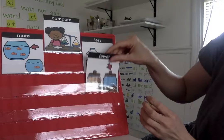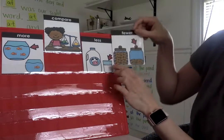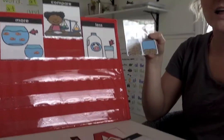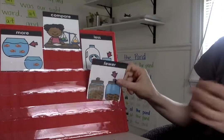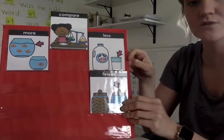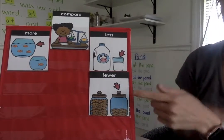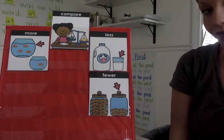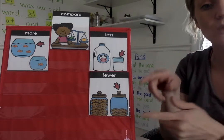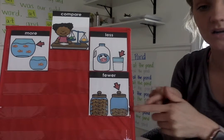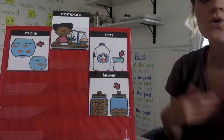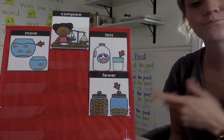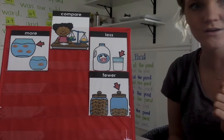Another word — 'fewer' — has the same meaning as less. So if you have less, you have fewer; those two words mean the same thing. Sometimes we might say the word 'less,' sometimes we may say the word 'fewer.' Fewer means that you have the smaller amount. So these two cookie jars — which one has fewer cookies? This one. Very good.